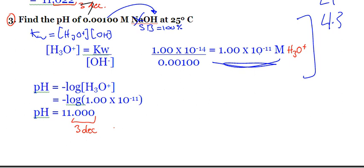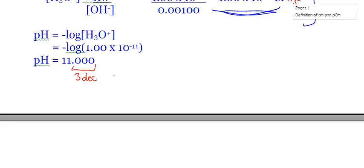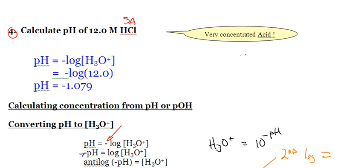If you're good with your calculator, you can go negative log, second function, answer. That's what we're going to start practicing for sure in class. So negative log of that H3O+ is your pH. It happens to be a nice easy number, 11.000.